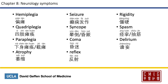Coma is 昏迷. Reflex is 反射. Rigidity is 僵硬. Spasm is 痉挛, or commonly known as 抽筋. Delirium is 谵妄.